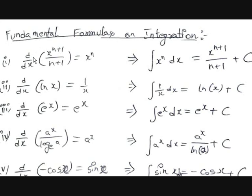Why have we taken this? Why can't we take d/dx of x^n, which gives n · x^(n-1)? Because we need the basic formula for the integral of x^n. If instead we got the formula for the integral of (n-1) · x^n, it would be confusing. So the integral of x^n dx is equal to x^(n+1) / (n+1) plus an arbitrary constant c.